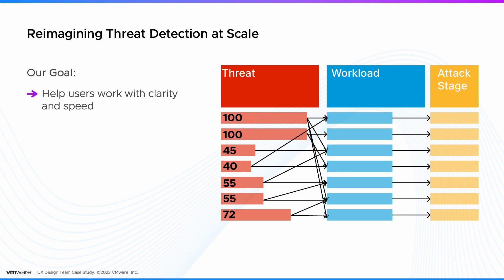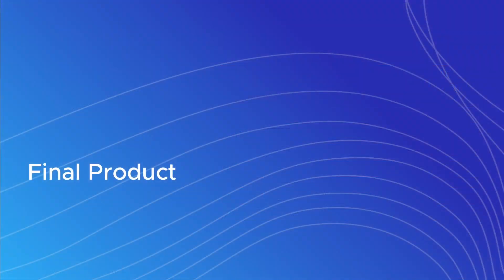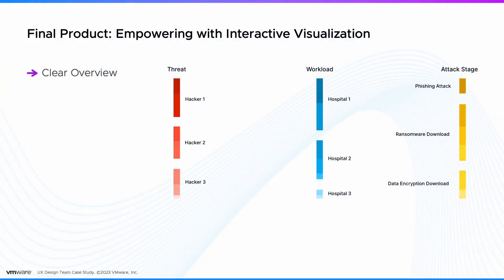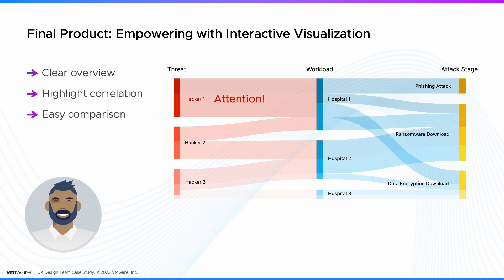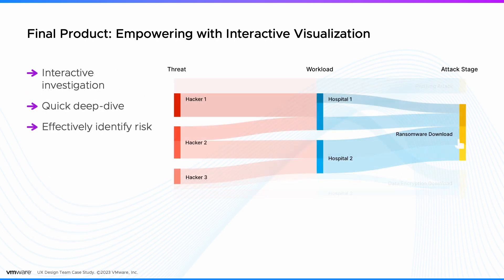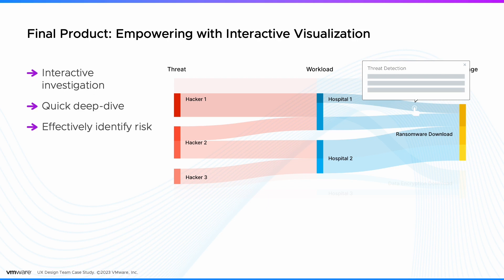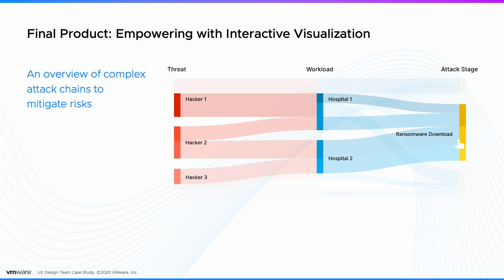To help users work with clarity and speed, we designed a simple way to visualize this information. After many iterations, here's the final product. We lined up the three key elements — threat, workload, and attack stage — by severity. By mapping the connections between them, users can easily understand the correlations between each of them. This allows easy comparison and identification of items that demand immediate attention. Users can hover over each bar for a quick dive, or click for a detailed list of detections. This visualization empowers analysts with an overview of complex attack chains and enables them to respond effectively to mitigate risk.